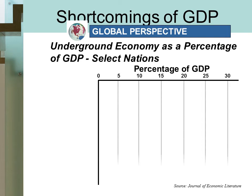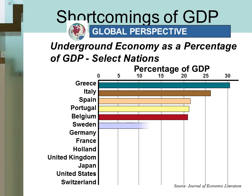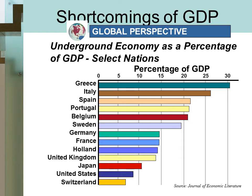Here's a global perspective on underground activity in selected nations. In the United States, unreported activity equals roughly 6.5 to 8% of GDP. But look at countries like Greece, Italy, Spain, Portugal, Belgium, Sweden, Germany, and France — they all have much larger percentages of underground activity relative to GDP. What they have in common is they're all European countries with much higher tax rates. When you tax income or economic activity, incentives matter — businesses and individuals find ways to avoid paying taxes by simply not reporting some economic activity.